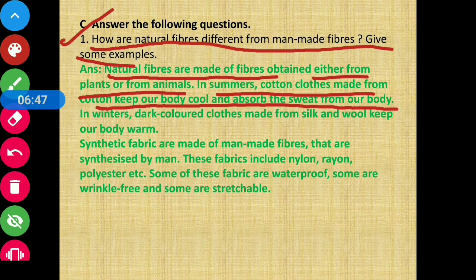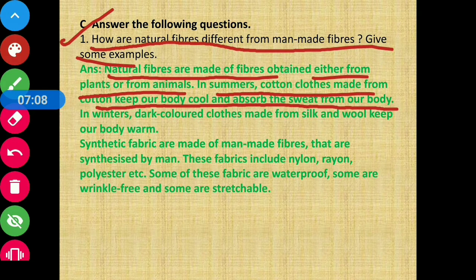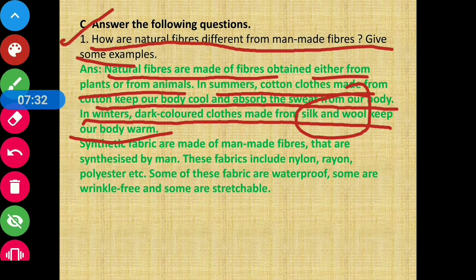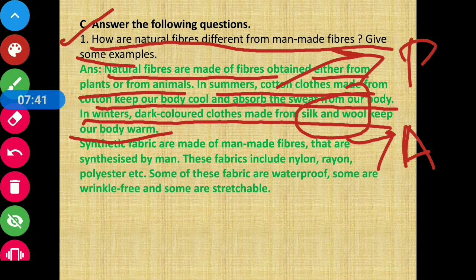We wear cotton clothes in summer because cotton fabric helps keep our body cool by absorbing the sweat from our body. In winters, dark-colored clothes made from silk and wool keep our body warm. Silk and wool are naturally obtained from animals, while cotton is obtained from plants. So natural fibers from animals help keep our body warm in winter.